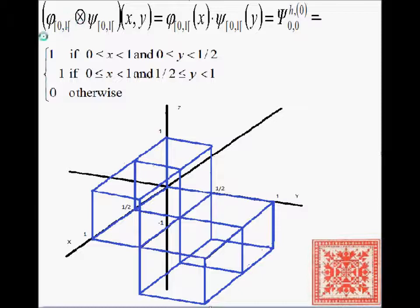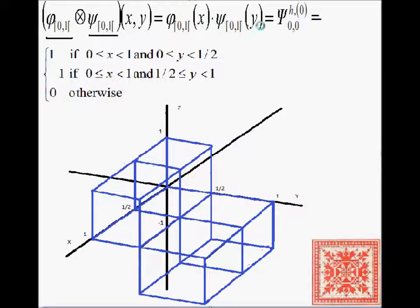This is the wavelet that measures the horizontal change, denoted psi superscript h,0,0. It consists of two cubes of height one, which then jump to two cubes of height one but in the negative direction — measuring the change horizontally from left to right.